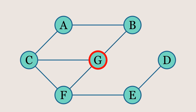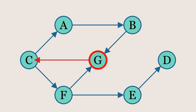In a directed graph, however, the degree is split into two parts: the in-degree and the out-degree. The in-degree represents the number of edges coming into the node, while the out-degree represents the number of edges going out from the node.